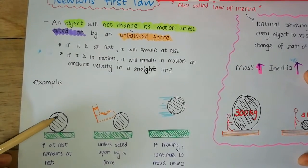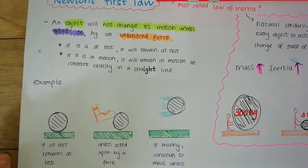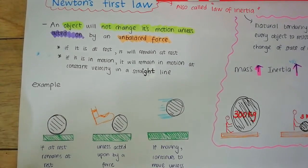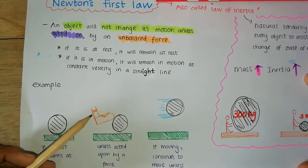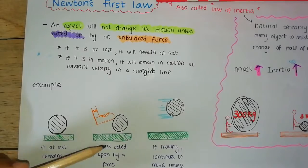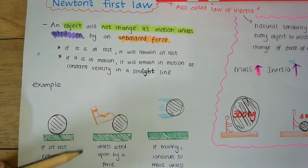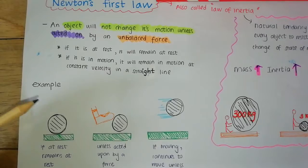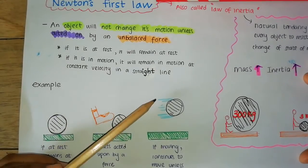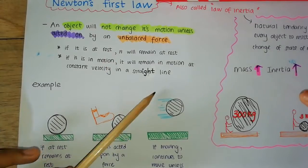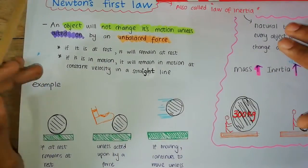Let me explain with another example. Consider this football sitting in a field with no forces acting on it — it will continue to stay at rest. The moment a player comes and hits the ball, it starts moving because there is an unbalanced force, causing a resultant force which makes it move. And once moving, if no forces act on it, it will continue to move at constant velocity in a straight line.